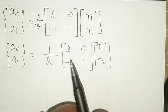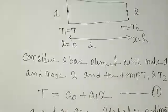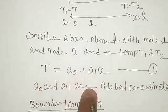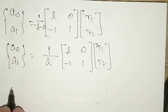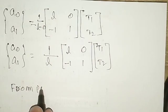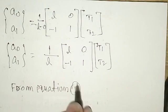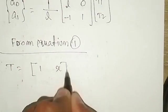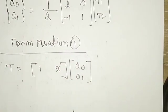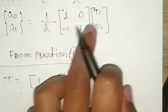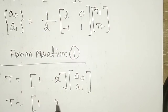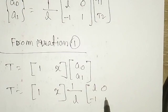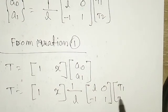Looking back at equation 1, T equals A₀ plus A₁x, we can write it in matrix form as T equals [1, x] times [A₀; A₁]. Substituting the expression for A₀ and A₁, we get T equals [1, x] times (1/L) times [L, 0; −1, 1] times [T1; T2].